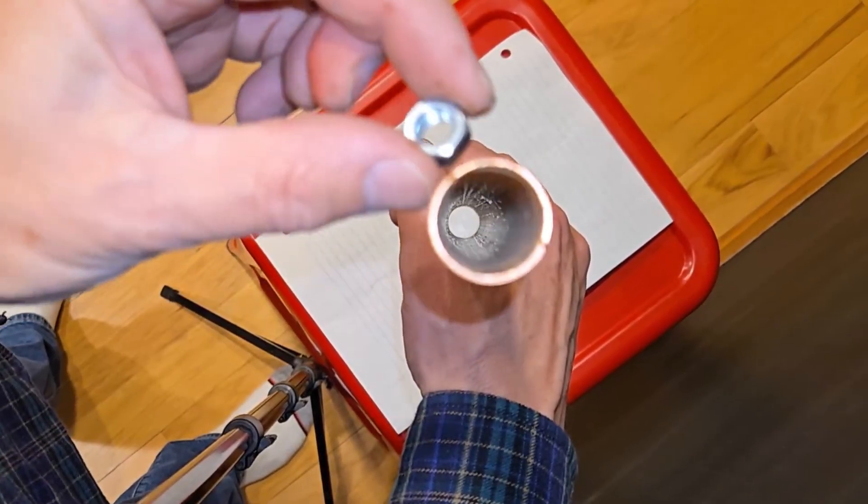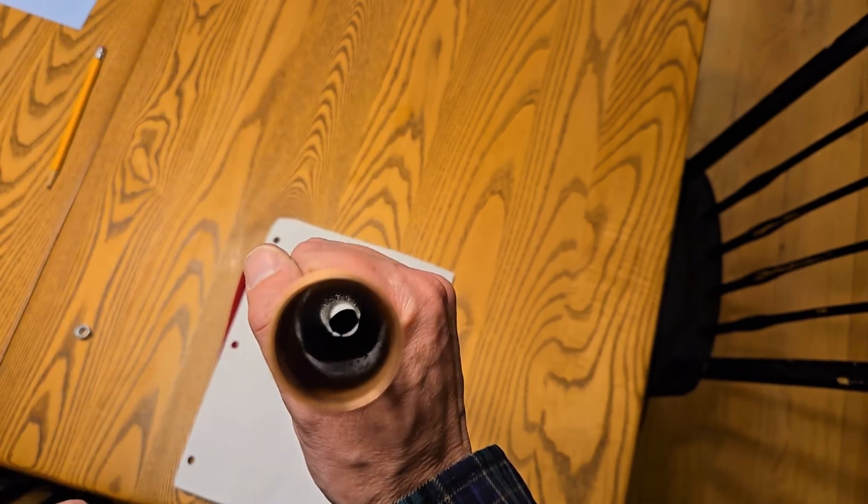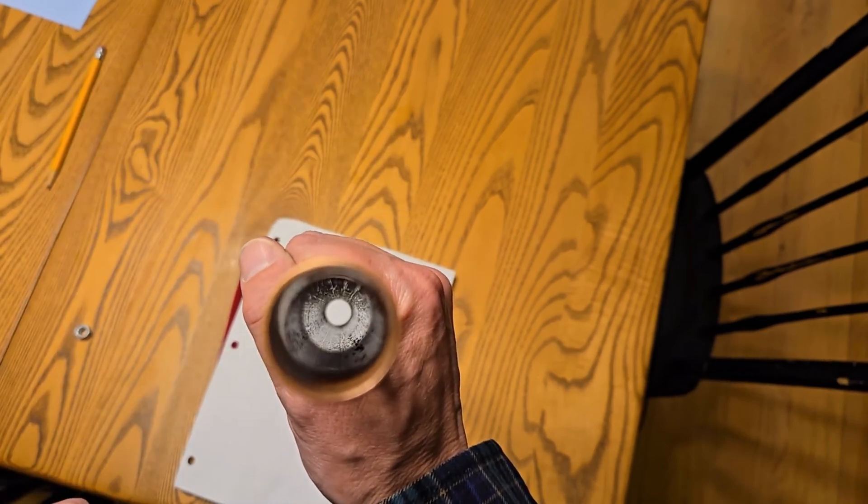Now, just drop the nut and the magnet through the pipe. When you drop the magnet through the pipe, it looks like it's floating in zero gravity.